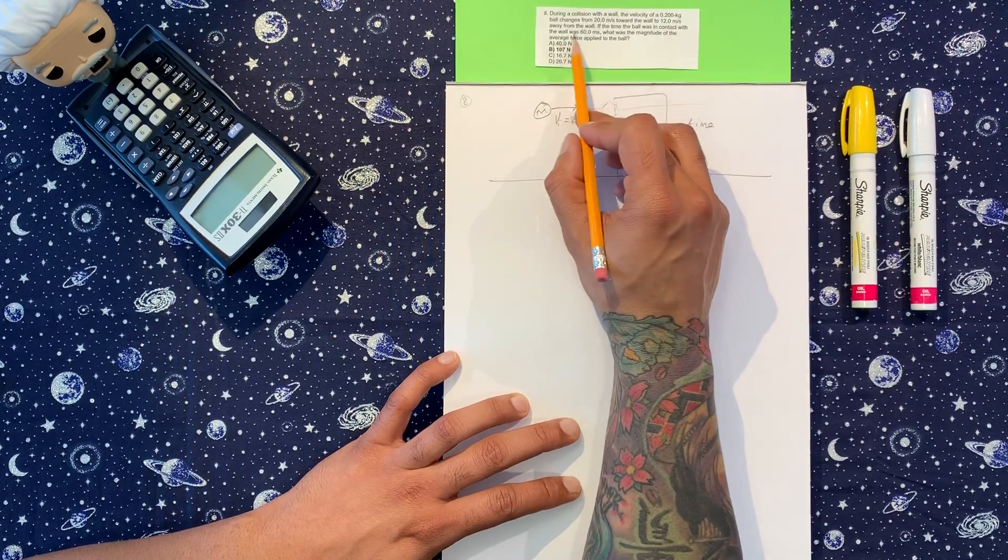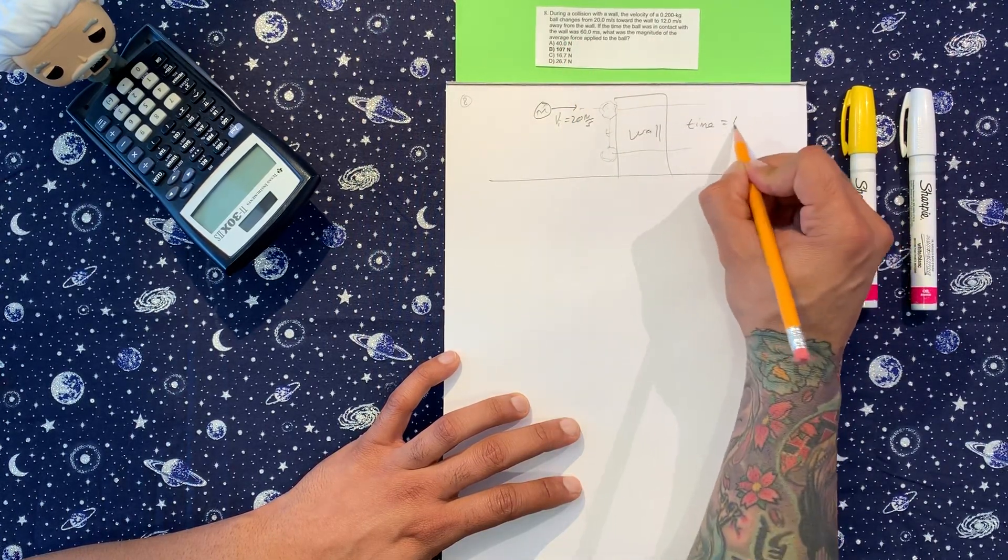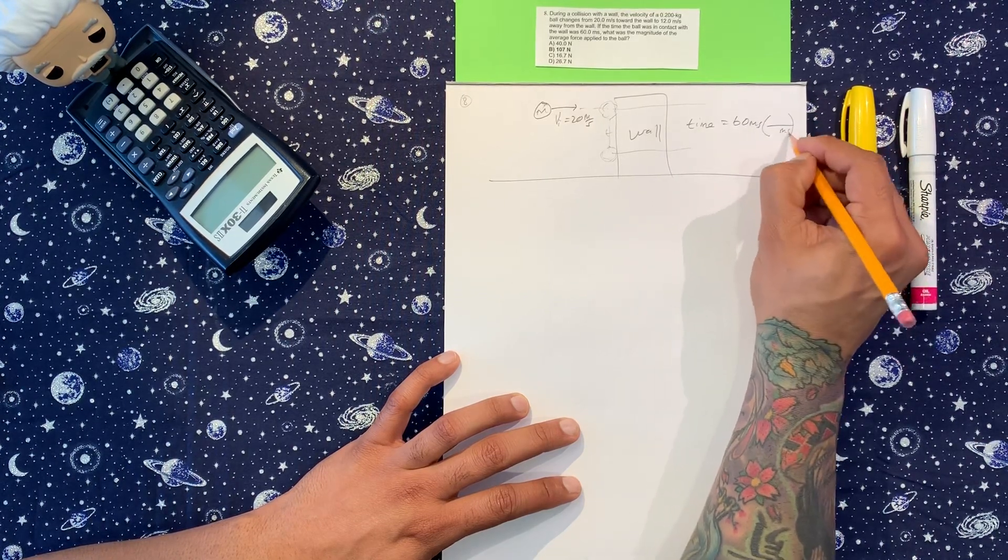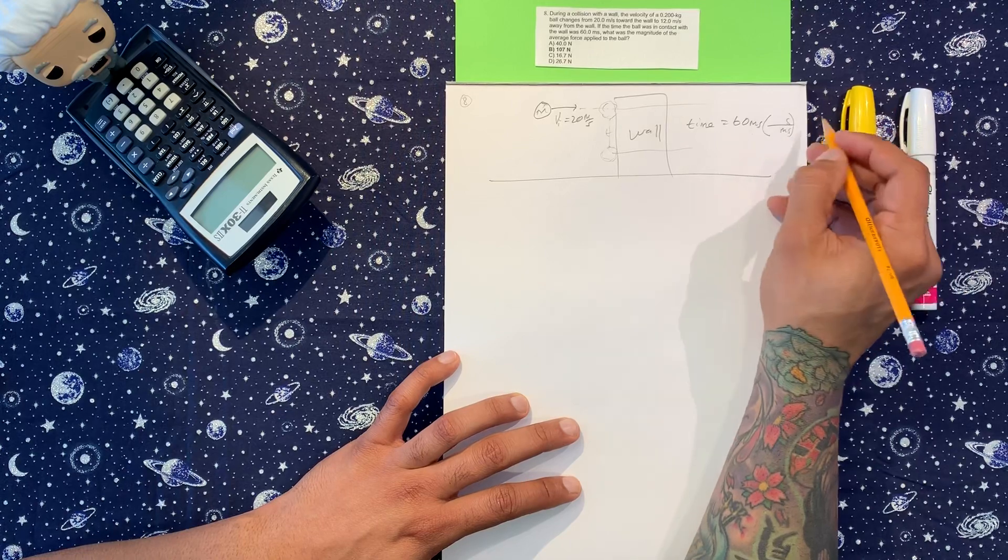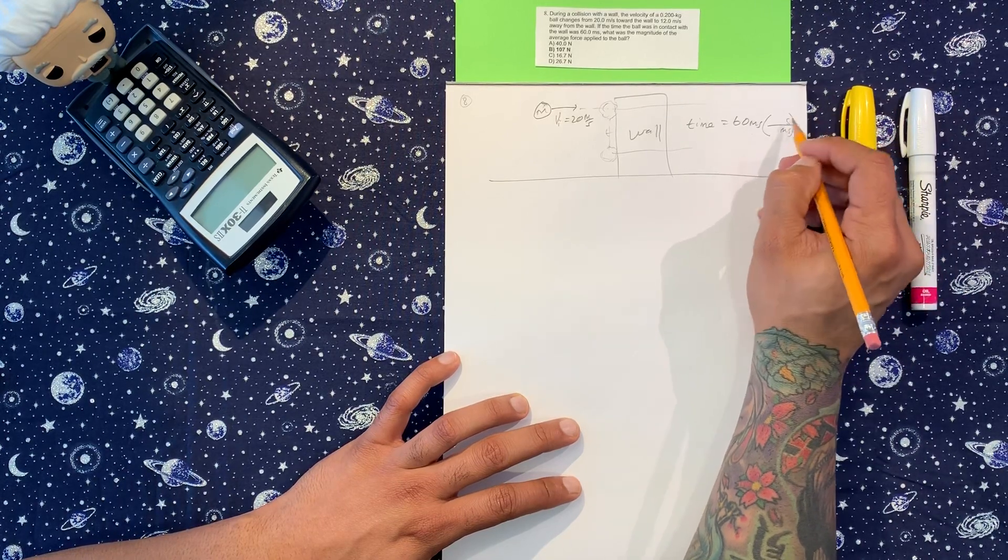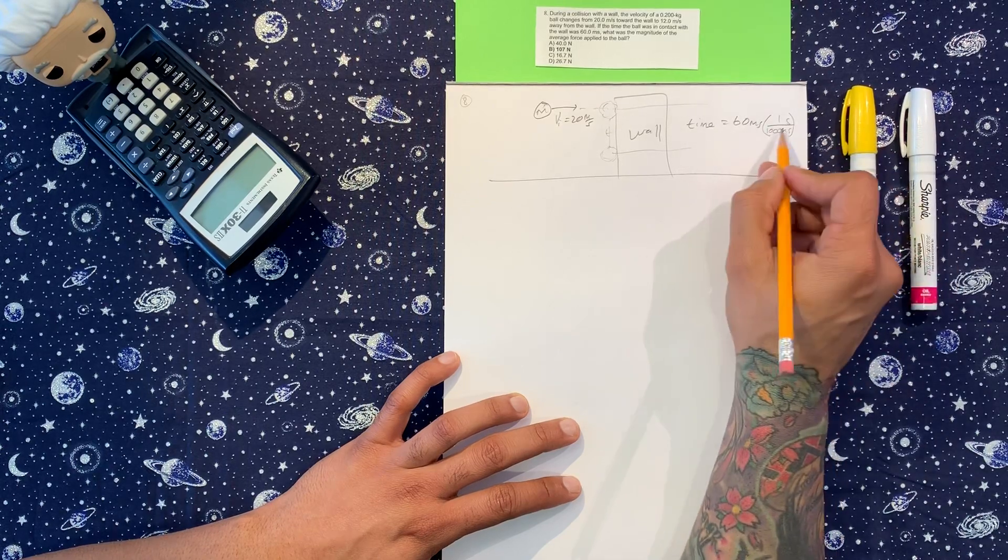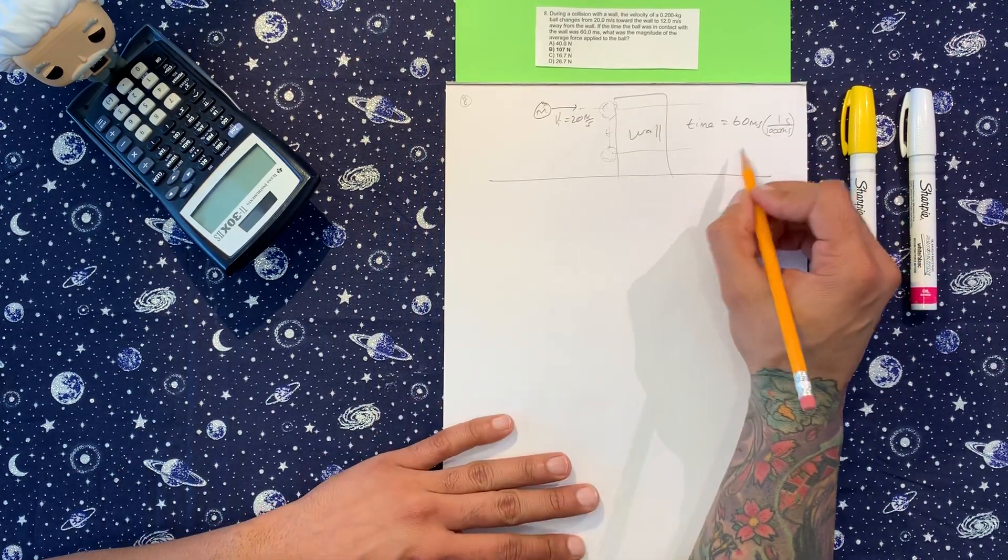They're saying that the time in contact with the wall was 60 milliseconds, so I'm going to convert that: milliseconds to seconds because you ain't gonna get me. One second is a thousand milliseconds, and so dividing that we should get time is equal to 0.06 seconds.